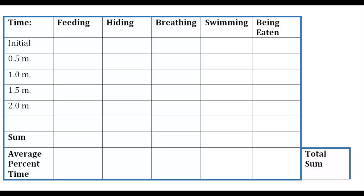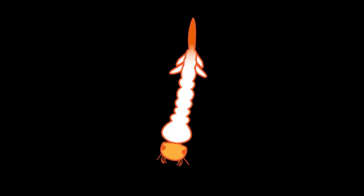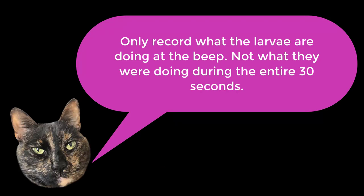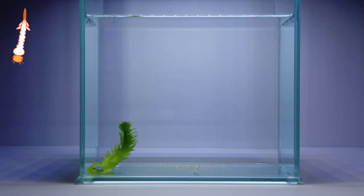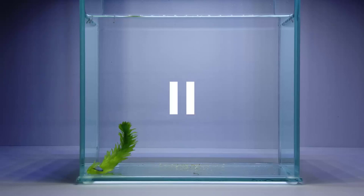Here's an example of the data sheet you will record on. Let's watch a sample video. At each 30-second mark, there will be a beep and an icon will appear in the upper left corner. When that goes off, record what the larvae are doing. For the practice, we'll pause the video to show you what you need to record. We'll start by recording what the mosquitoes are doing initially — looks like 4 larvae are breathing and 1 is feeding.